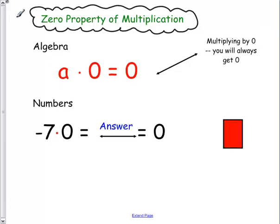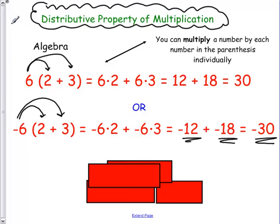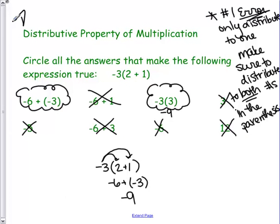The fifth that we should see in your notebook is the zero property. Finally, we should see the distributive property along with this example. Make sure you have this example written down because you will see one very similar to that in the future. And that's all I have for you today.